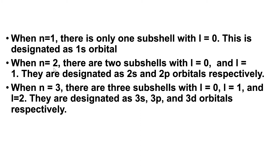When N=2, there will be two subshells. l values go from 0 to N minus 1, so 0 to 1. When l=0, ml is also 0, giving the 2s orbital. When l=1, we get the 2p orbital. So N=2 gives us 2s and 2p orbitals respectively.